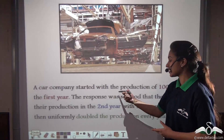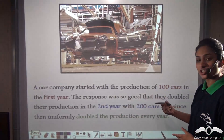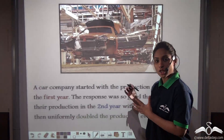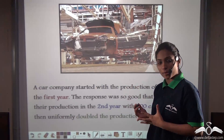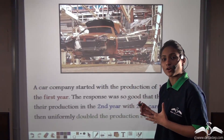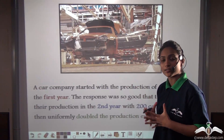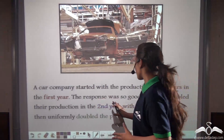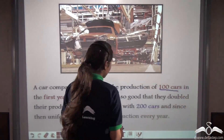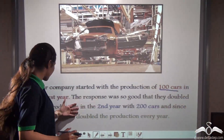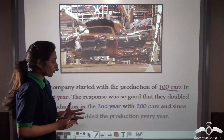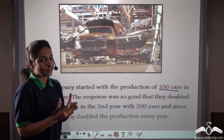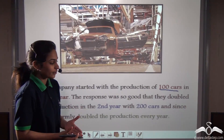A car company started with the production of hundred cars in the first year. The response was so good that they doubled their production in the second year. So the production in the second year is two hundred.